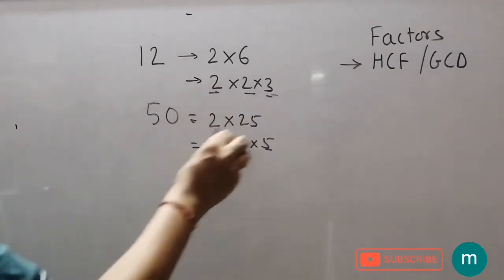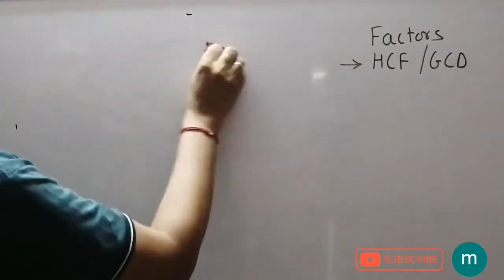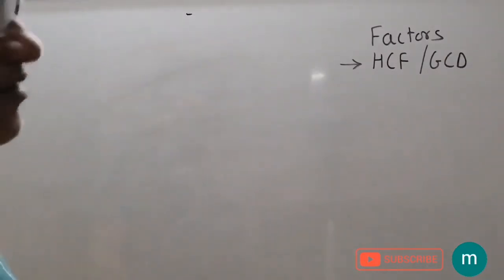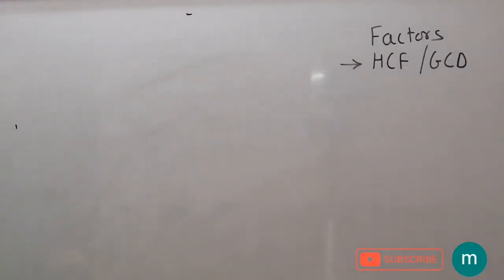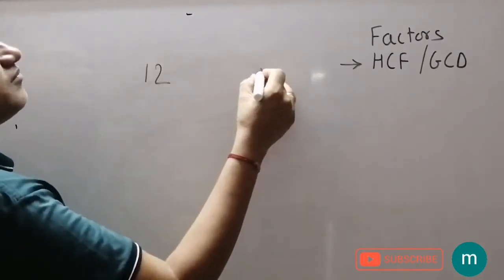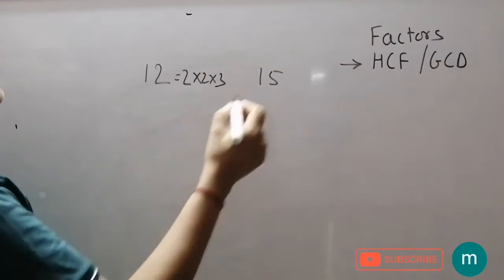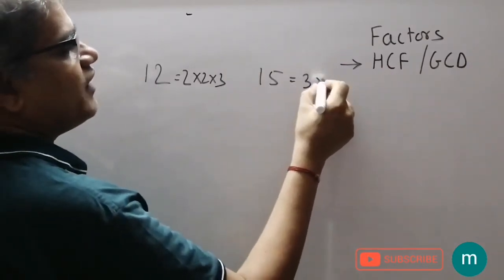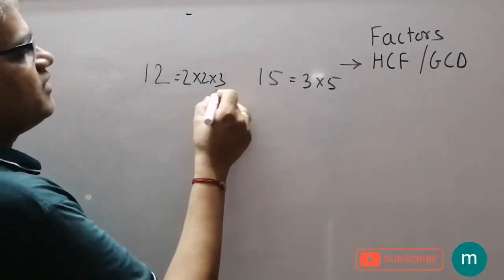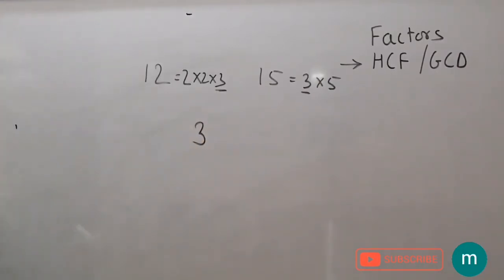The factors are easier. I can explain the facts. What matters? The highest common factor is the greatest common divisor. What matters is 12 and 15. The first thing is that the factor of 12 is 2 into 3, and the factor of 15 is 3 into 5.